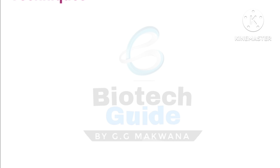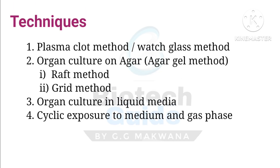There are basically four techniques. First, the plasma clot method, also called the watch glass method. Second, organ culture on agar, also known as the agar method — which has two sub-techniques: the raft method and the grid method. Third, organ culture in liquid media. Fourth, cyclic exposure to medium and gas phase. We will discuss each one by one.